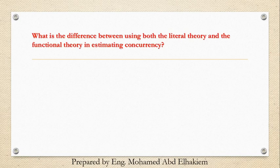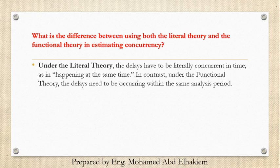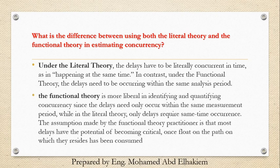What is the difference between using the littoral theory and the functional theory in estimating concurrency? Under the littoral theory, the delays have to be literally concurrent in time — happening at the same time. In contrast, under the functional theory, the delays need only be occurring within the same analysis period. The functional theory is more liberal in identifying and quantifying concurrency, since the delays need only occur within the same measurement period, while in the littoral theory, delays require same-time occurrence. The assumption made by the functional theory practitioner is that most delays have the potential of becoming critical once float on the path on which they reside has been consumed.